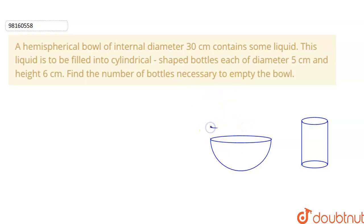So what do we have in the bowl? 30 cm. And what do we have in the bottles? 5 cm diameter and height 6 cm. We have to fill this liquid into bottles like this.